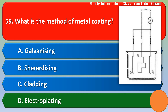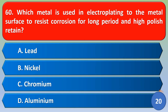Next question: Which metal is used in electroplating a metal surface to resist corrosion for a long period and provide a high polish finish? Option A: lead. Option B: nickel. Option C: chromium. Option D: aluminium. The correct answer is Option C: chromium.